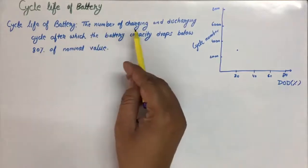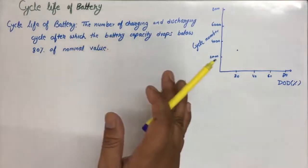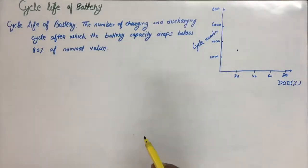It is defined as the number of charging and discharging cycles after which the capacity drops below 80% of nominal value.